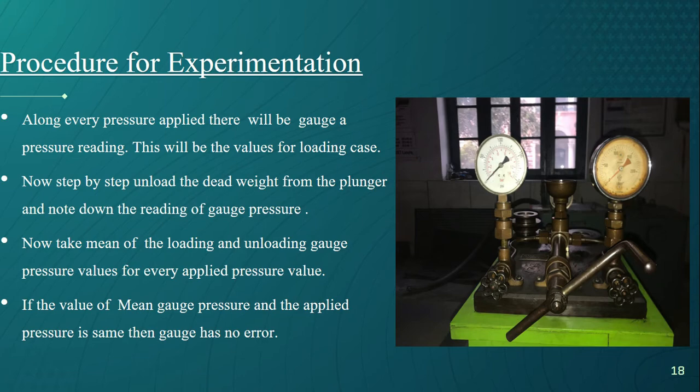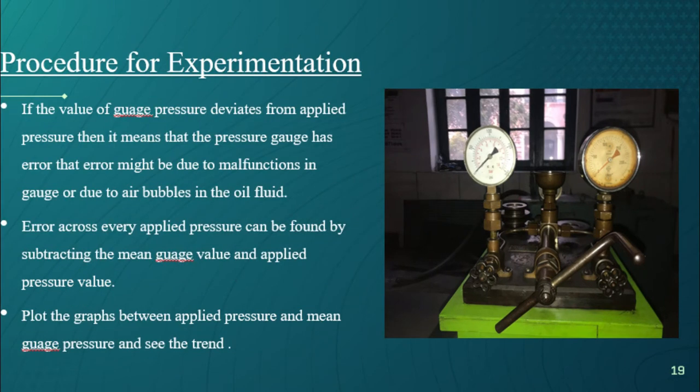Now step by step unload the dead weight from the plunger and note down the reading of gauge pressure. Now take mean of the loading and unloading gauge pressure values for every applied pressure value. If the value of mean gauge pressure and the applied pressure is same, then gauge has no error.